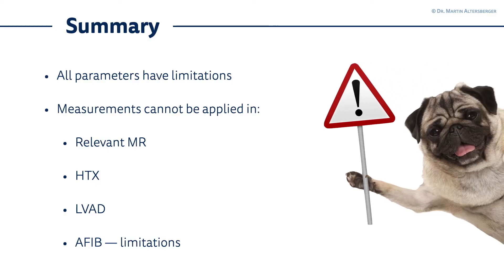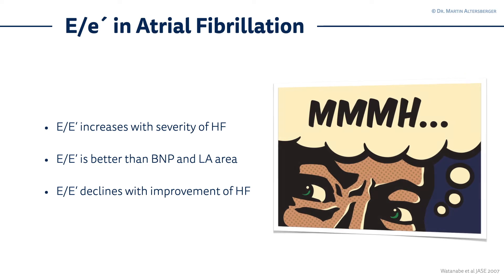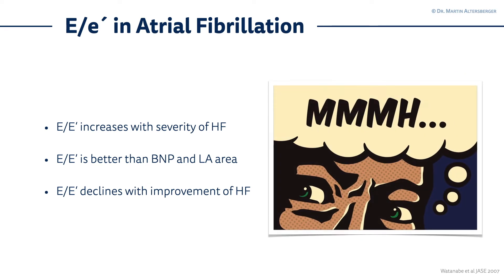Of course, we mentioned it already - in atrial fibrillation, you have several limitations. For example, you do not have an E to A ratio, but you can rely on E to E'. E to E' in atrial fibrillation actually provides a lot of information because E to E' increases with severity of heart failure in those patients. An E to E' which is lower is better. E to E' ratio is overall better than BNP and left atrial area. If an improvement of heart failure with heart failure treatment is possible in a patient, E to E' is declining.